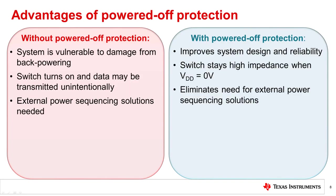In system cases with power sequencing, hot plug, hot insertion, fault events, and over voltage events, powered off protection is important. Devices with the powered off protection feature protect their systems by ensuring high impedance during power off, and therefore eliminate the need for power sequencing. The powered off protection feature simplifies system design and may potentially reduce BOM count and cost.